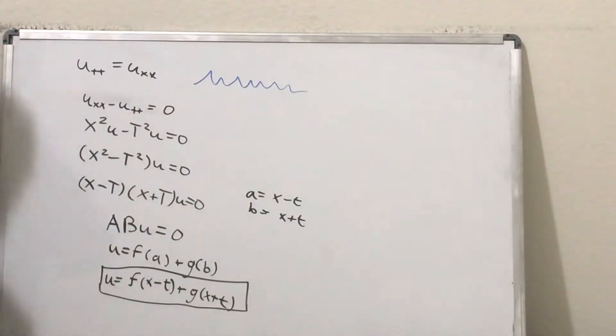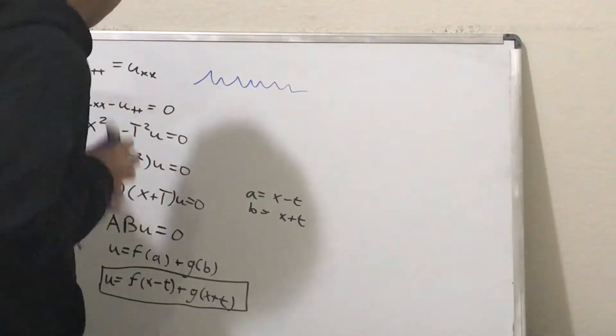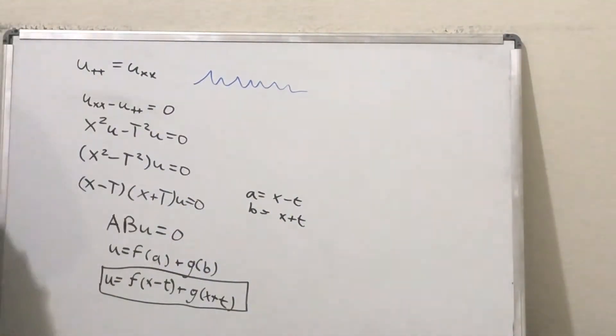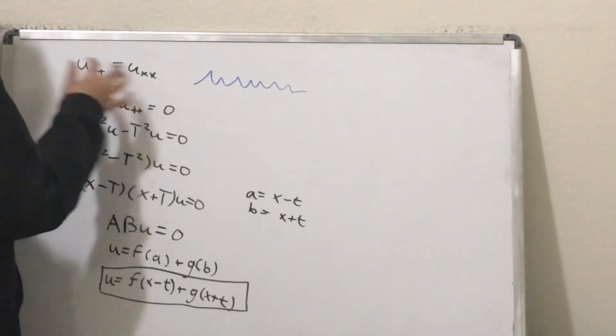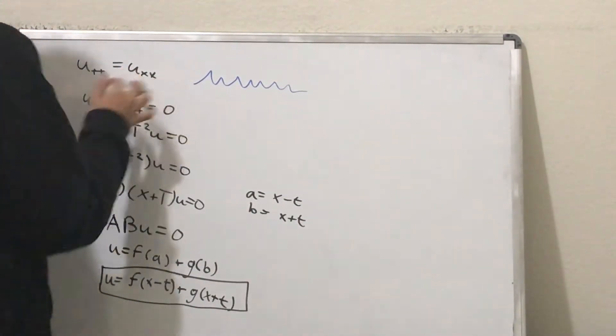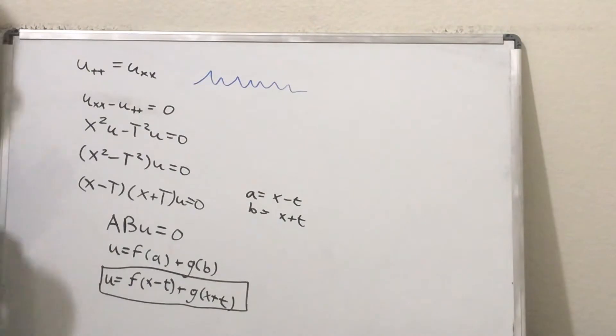So, here we go. It's a second order differential equation, and we have the second derivative with respect to time being proportional to the second derivative with respect to space.